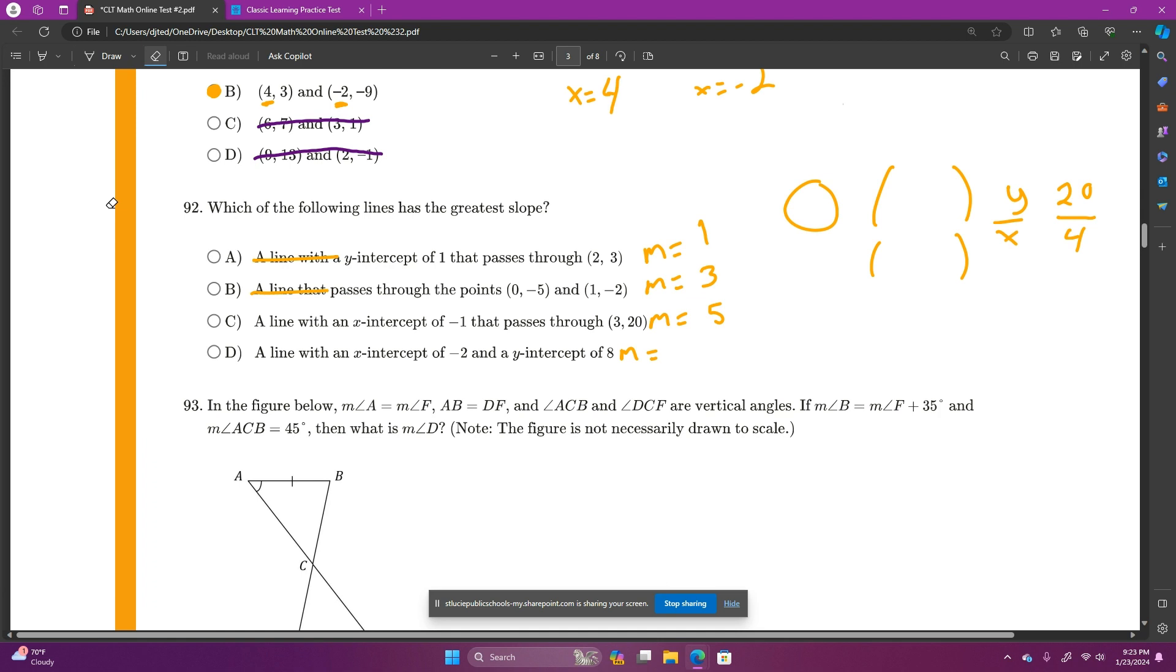And last one, answer choice D says x-intercept of negative 2. So, when y is 0, x is negative 2. And a y-intercept of 8, so where x is 0, y is 8. So, change in y, we're going up 8, and we're changing x, we're going over 2, and that would be 4. So, C has the largest slope out of those 4.